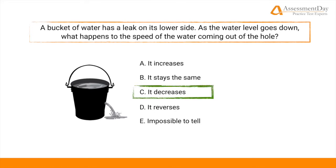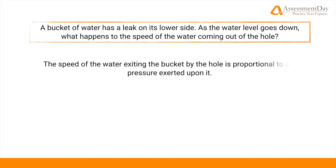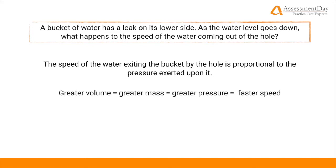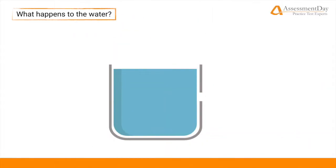The correct answer is C — it decreases. The reason is because the speed of the water exiting the bucket by the hole is proportional to the pressure exerted upon it. So when the bucket is full, there is a greater volume of water trying to exit the bucket via the hole. A greater volume of water is a greater mass of water, and therefore it exerts a greater pressure, and the greater pressure translates to faster speed. As more water leaves the bucket via the hole, the volume of the head of water decreases, thus the mass of the water decreases, and the pressure decreases as well.